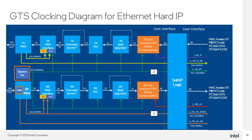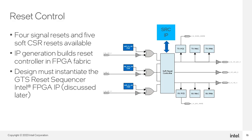Gearboxes are automatically enabled in the PMA interface and the interface FIFO, if needed, to handle width conversion. The 80-bit user interface width is a superset of the four supported interface types; once a user interface type is chosen, the appropriate signals will be enabled through the IP. For resets, the Hard IP has signal resets and five resets controlled by control registers. To manage these, the IP builds a reset controller using soft logic in the FPGA fabric. Designers must also instantiate a reset request sequencer IP in their designs.